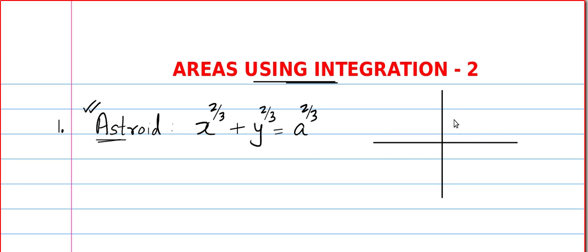The graph looks like this — the lengths should be the same everywhere. This is x = a and this is the origin, and this height is also the same — it is a units. So the y-coordinate will be a. It's a symmetric figure, meaning if you find the area in one quadrant, all you have to do is multiply by 4 to get the total area.